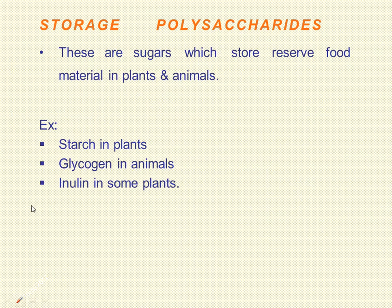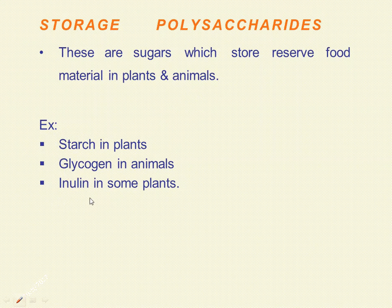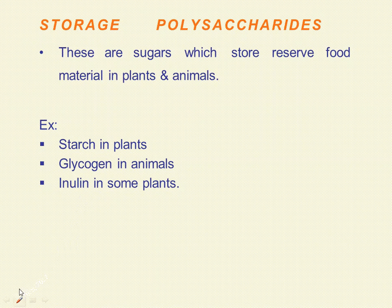In this session we are concentrating on storage polysaccharides — the sugars which store reserve food materials in both plants and animals. The examples we will cover are starch, glycogen, and inulin. Starch is present in plants as the reserved material resulting from photosynthesis, where glucose units are joined to form starch. Glycogen is the storage polysaccharide in animals, and inulin is found in some plants.